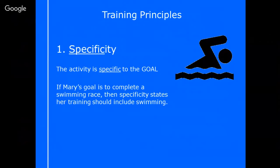So if Mary's goal is to complete a swimming race, then the specificity principle states that her training should include swimming. It's as simple as that. If she's doing cycling, it should include cycling. It's about making the training specific to the goal.